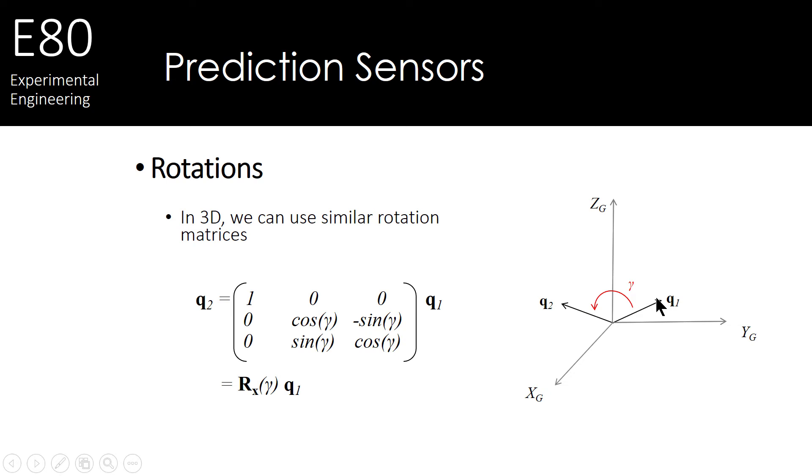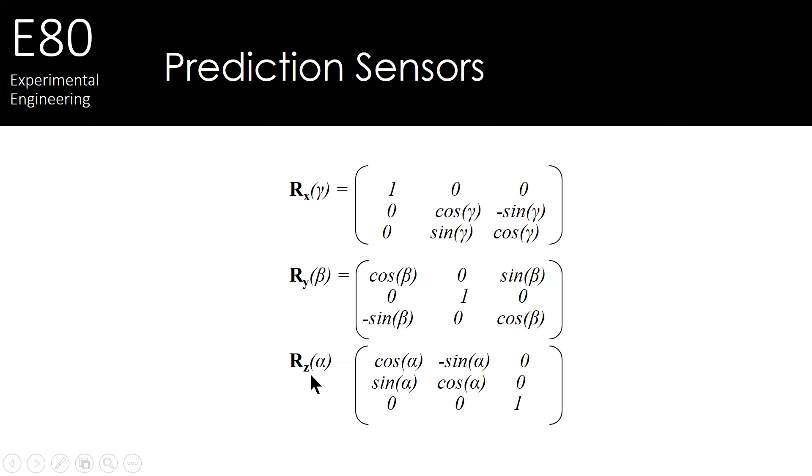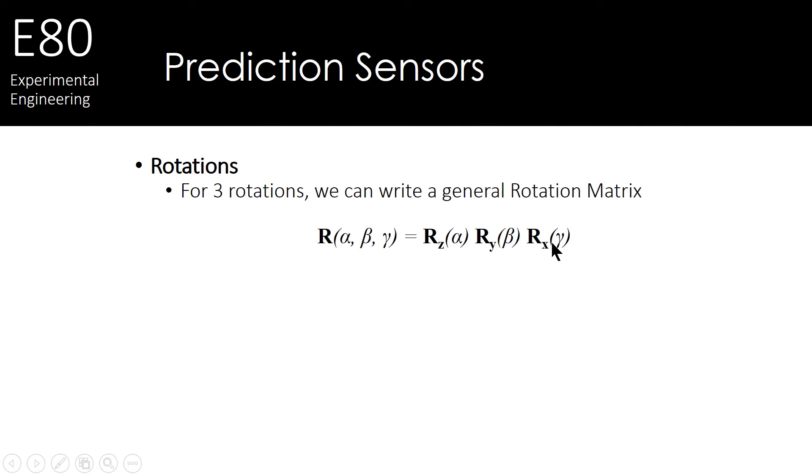we can actually rotate it about the x-axis, the y-axis, and the z-axis. Roll, pitch, and yaw. Now we can actually multiply these all together to get one large rotation matrix, so that we can take any vector and rotate it through roll, pitch, and yaw to get another vector.